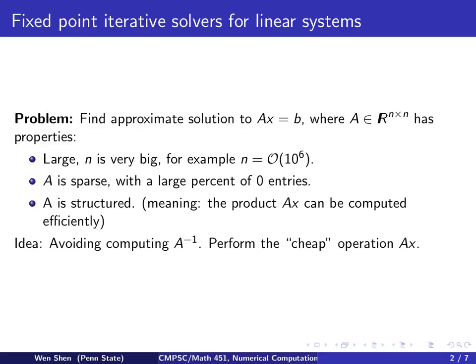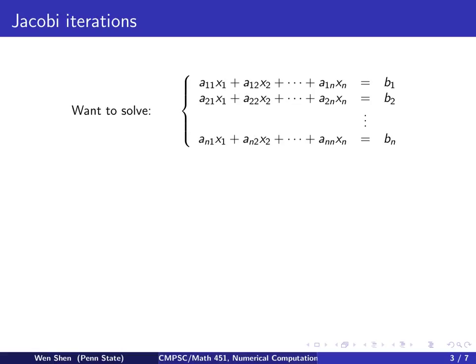So the main idea now will be, instead of trying to compute A inverse, which is expensive, now we perform the cheap operation, that is the multiplication of A with the vector. Let's write out our system into N equations and N unknowns. So this is what we want to solve, the problem we have.